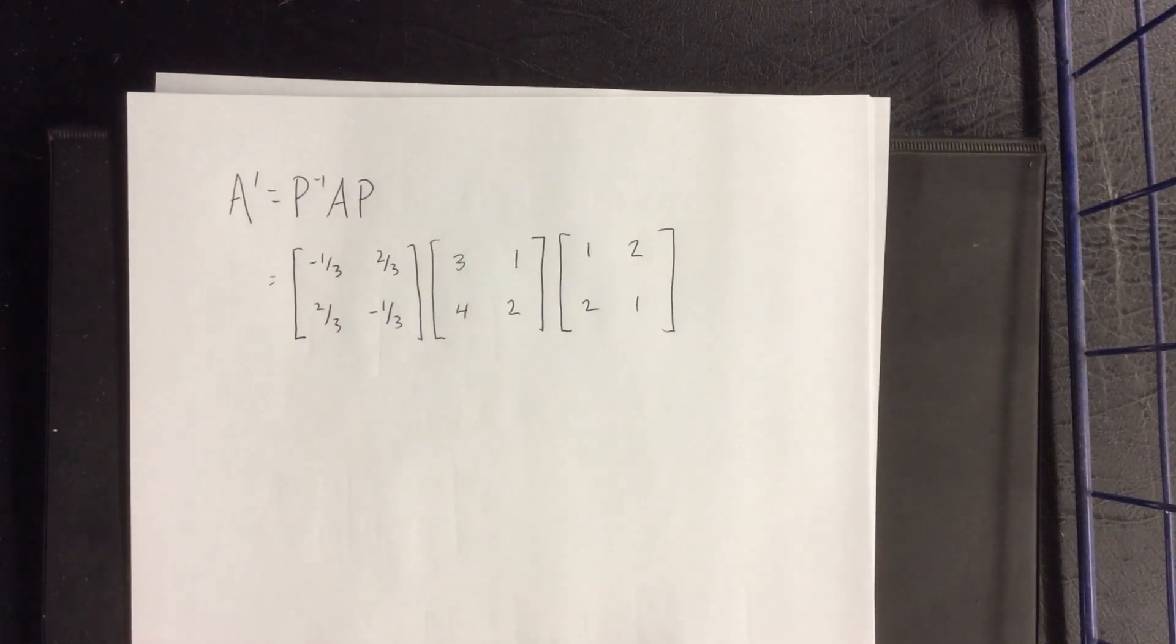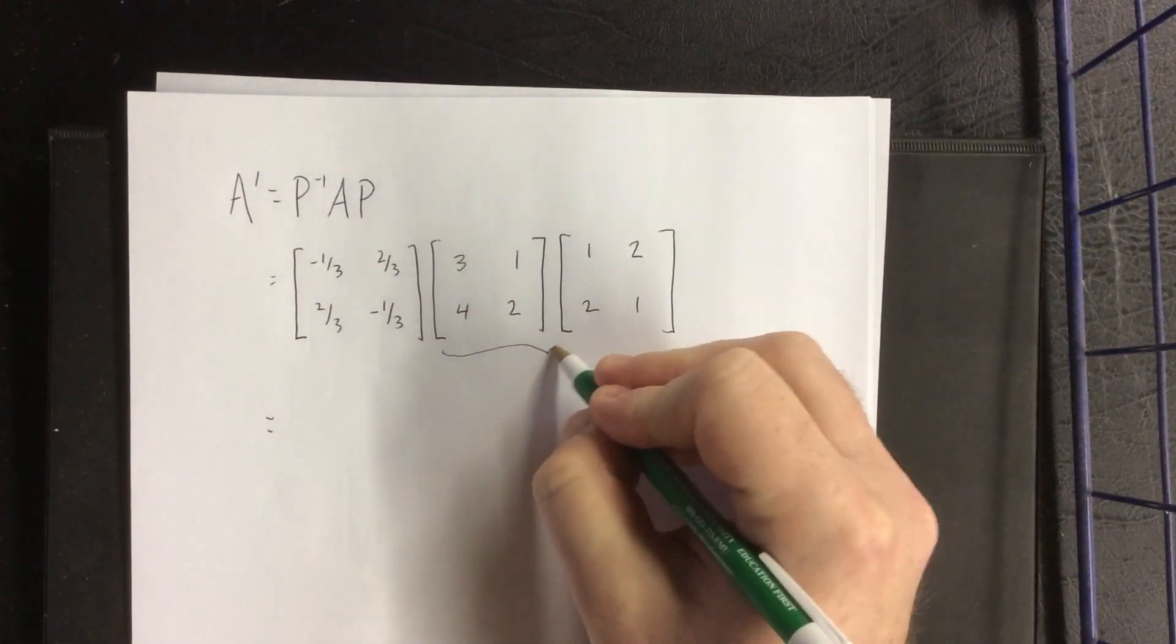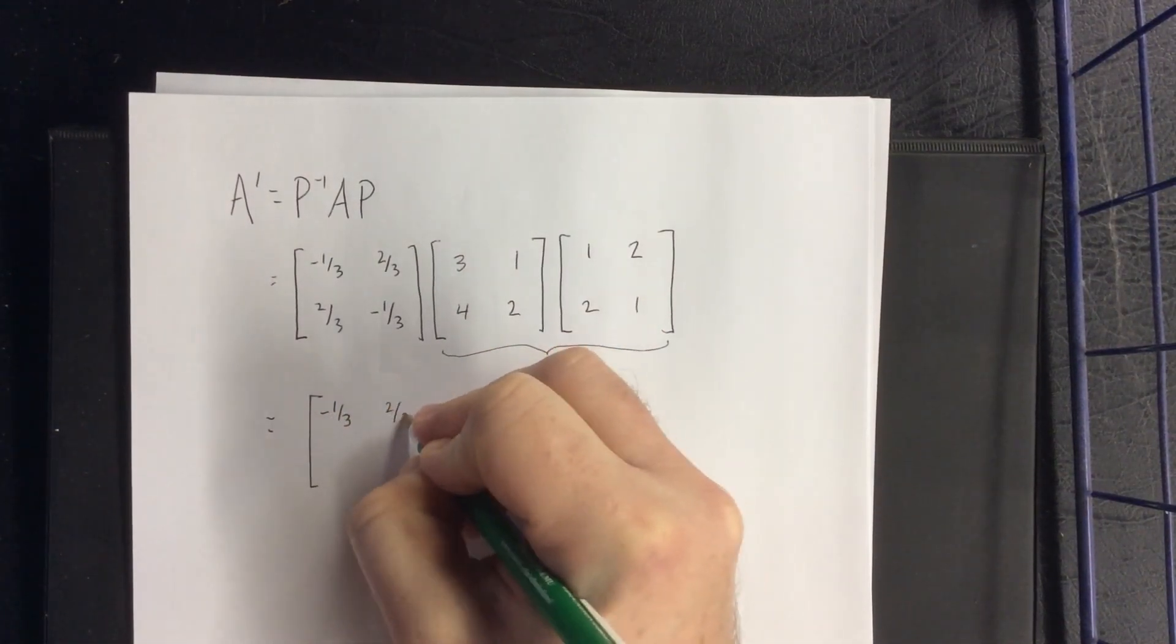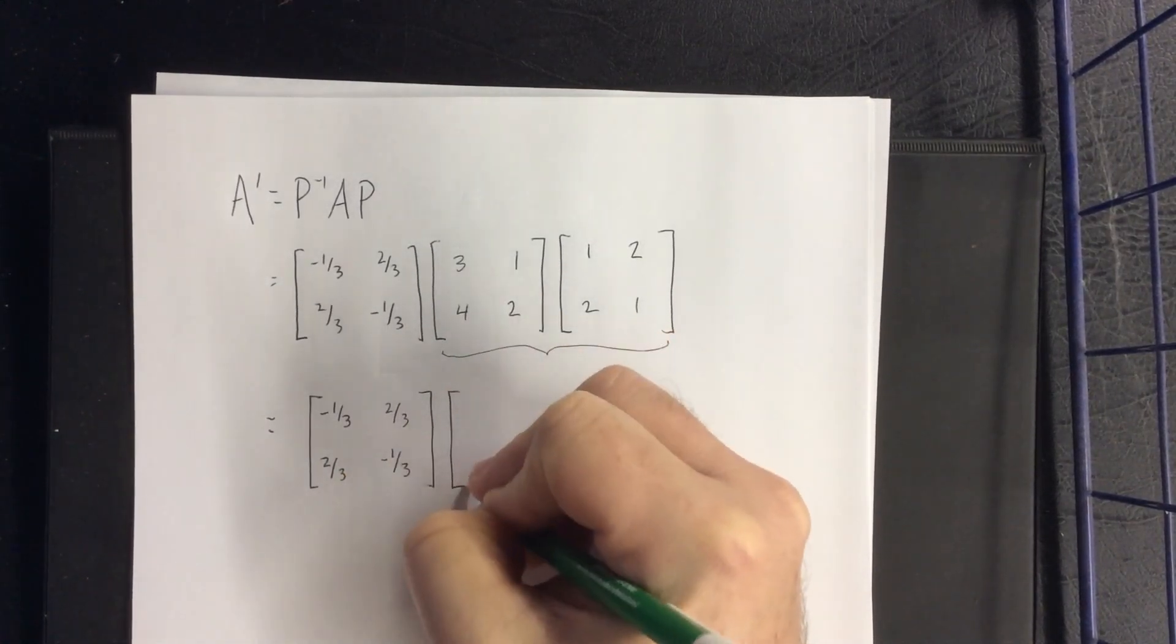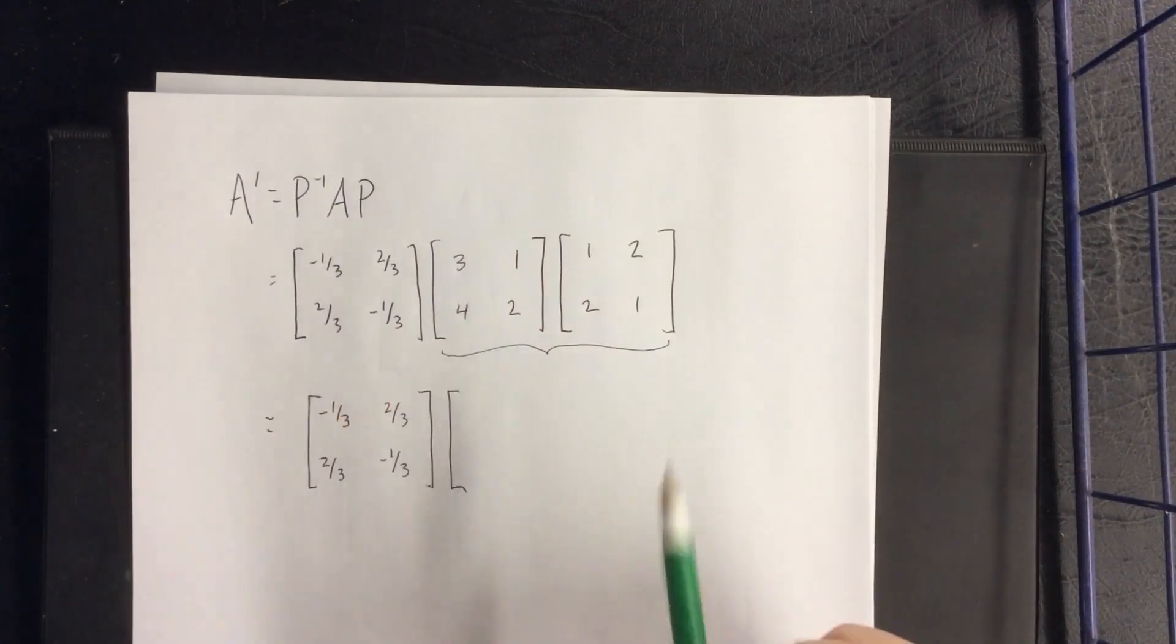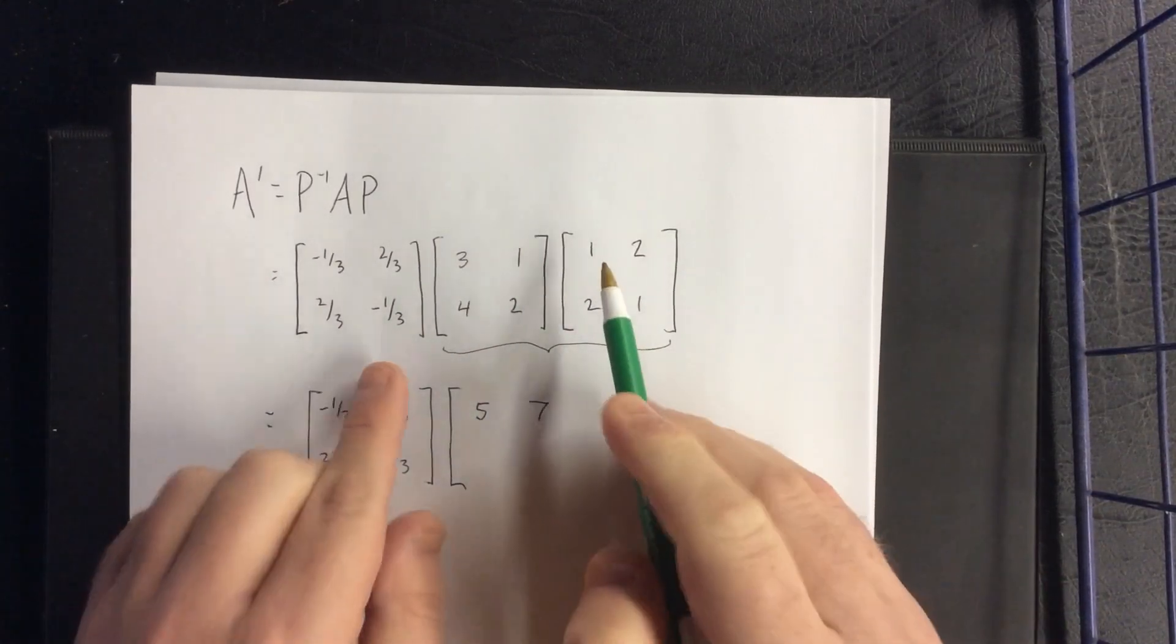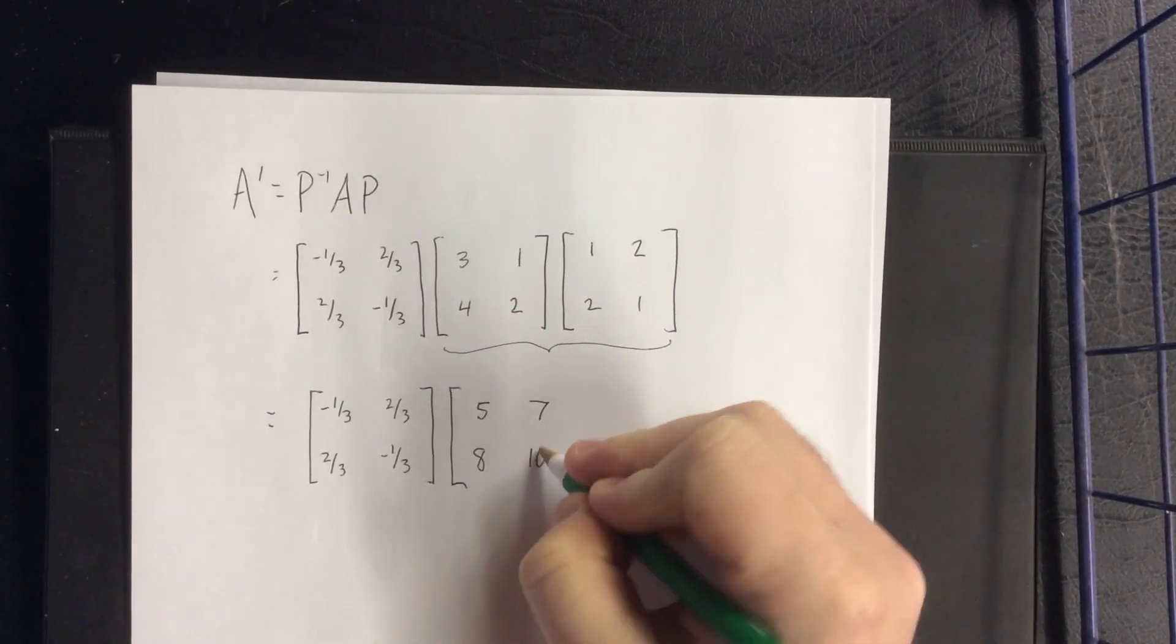Now again for this multiplication, if I actually had access to a calculator, I would toss this all into a calculator and be done very quickly. But since I don't, I'm going to have to do this the fun way, which is by hand. So first I'm going to multiply A times P because that seems to have fewer fractions. 3 times 1 plus 1 times 2, that will give us 5. 3 times 2 plus 1 times 1, that'll give me 7. 4 times 1 plus 2 times 2 is 8, and 4 times 2 plus 2 times 1 is 10.